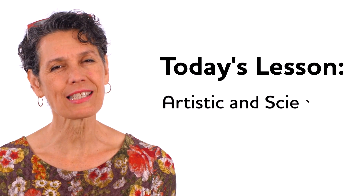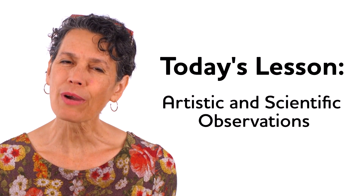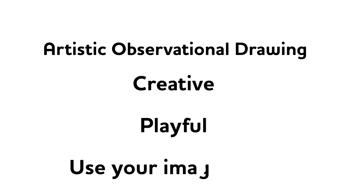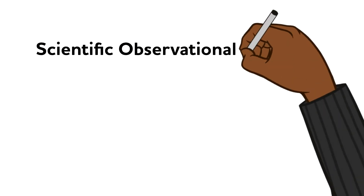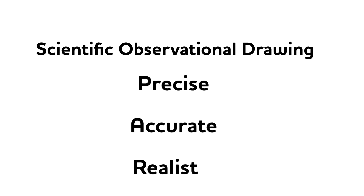There are two different types of observational drawings we're going to discuss today. That's why today's lesson is called Artistic and Scientific Observations. With an artistic observational drawing, you can be creative and playful and use your imagination. The other type is what we call a scientific observational drawing, and with this type of drawing you want to be precise, accurate, and as realistic as possible.